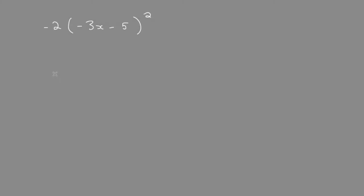We need to expand and simplify. Do not distribute the two in first. We need to expand the perfect square first. Leave the two out, and you might remember this is foiling.